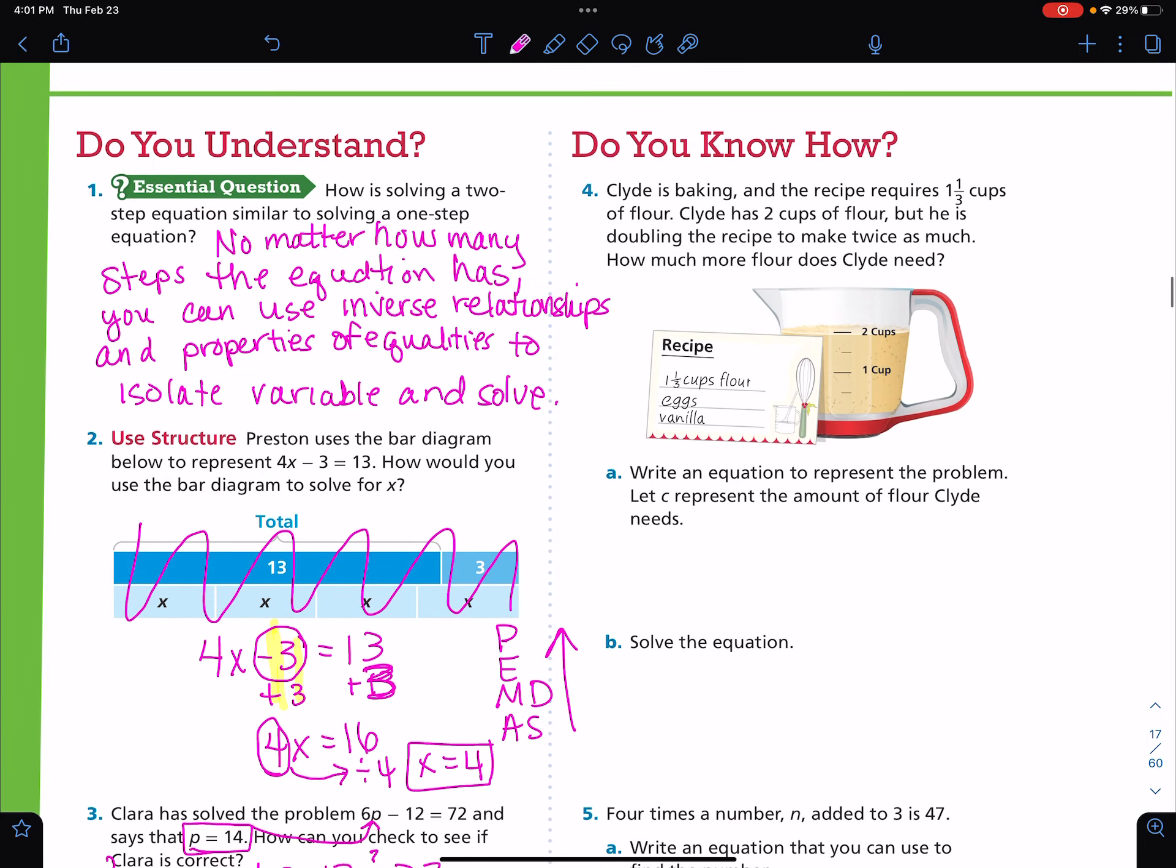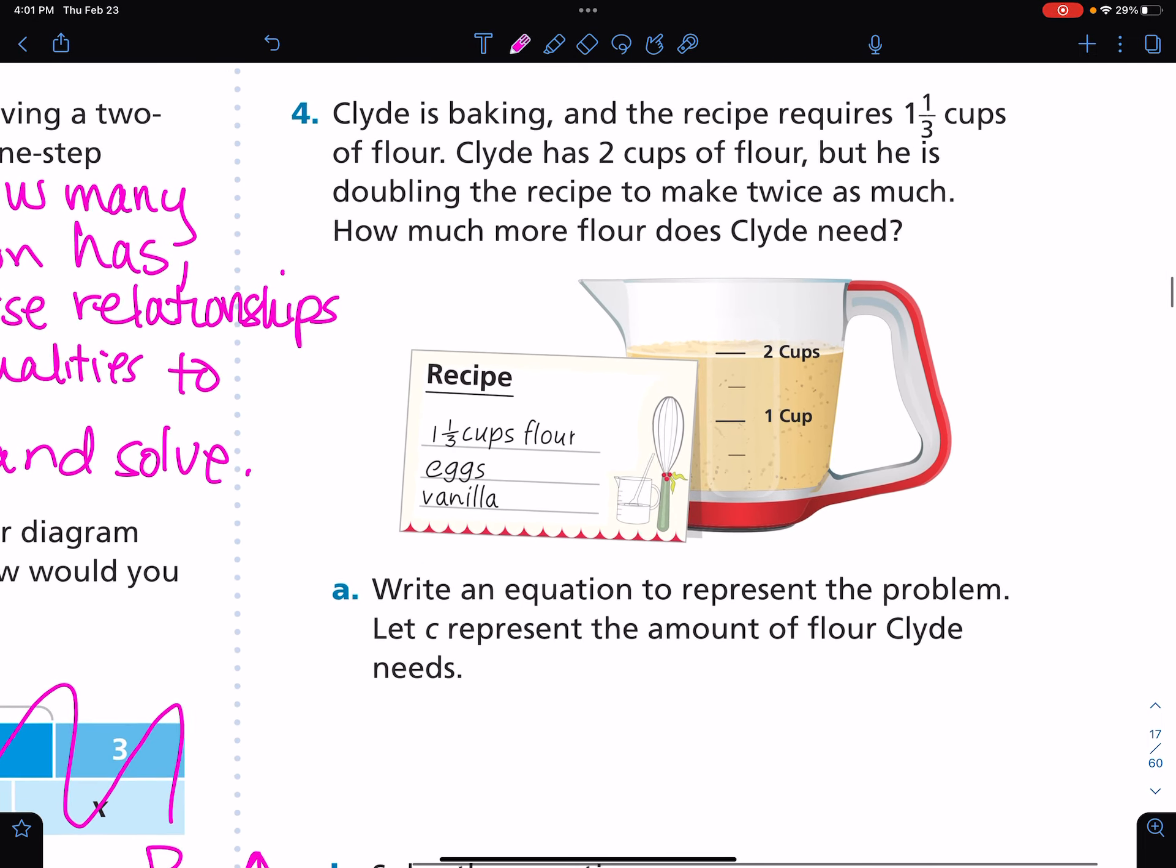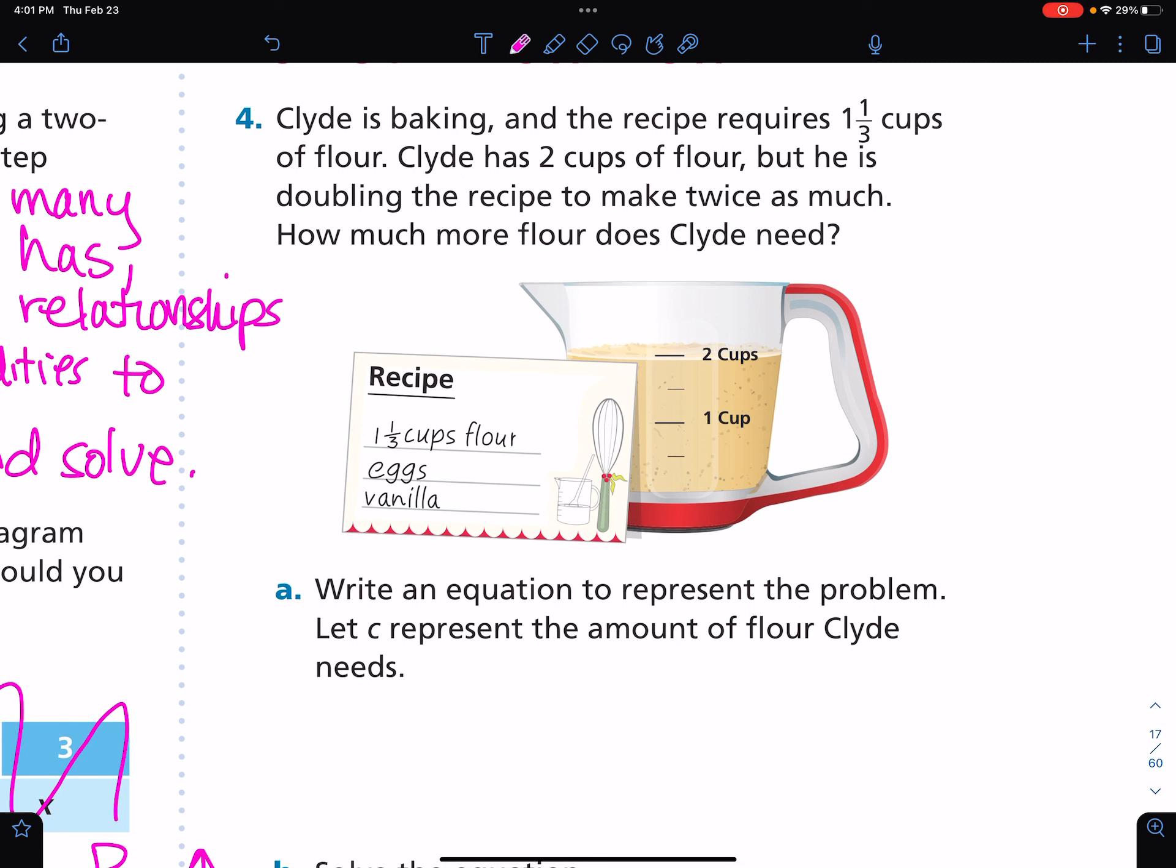Okay, if we look at number 4, this is where we have to have a written problem, and they have our lovely fractions. So I'm going to circle and highlight what's important. Clyde is baking, and the recipe requires one and a third cups of flour. Clyde has two cups of flour, but he is doubling the recipe to make twice as much. How much more flour does Clyde need? So it wants us to use C to represent the amount of flour that Clyde needs, and we're writing an equation.